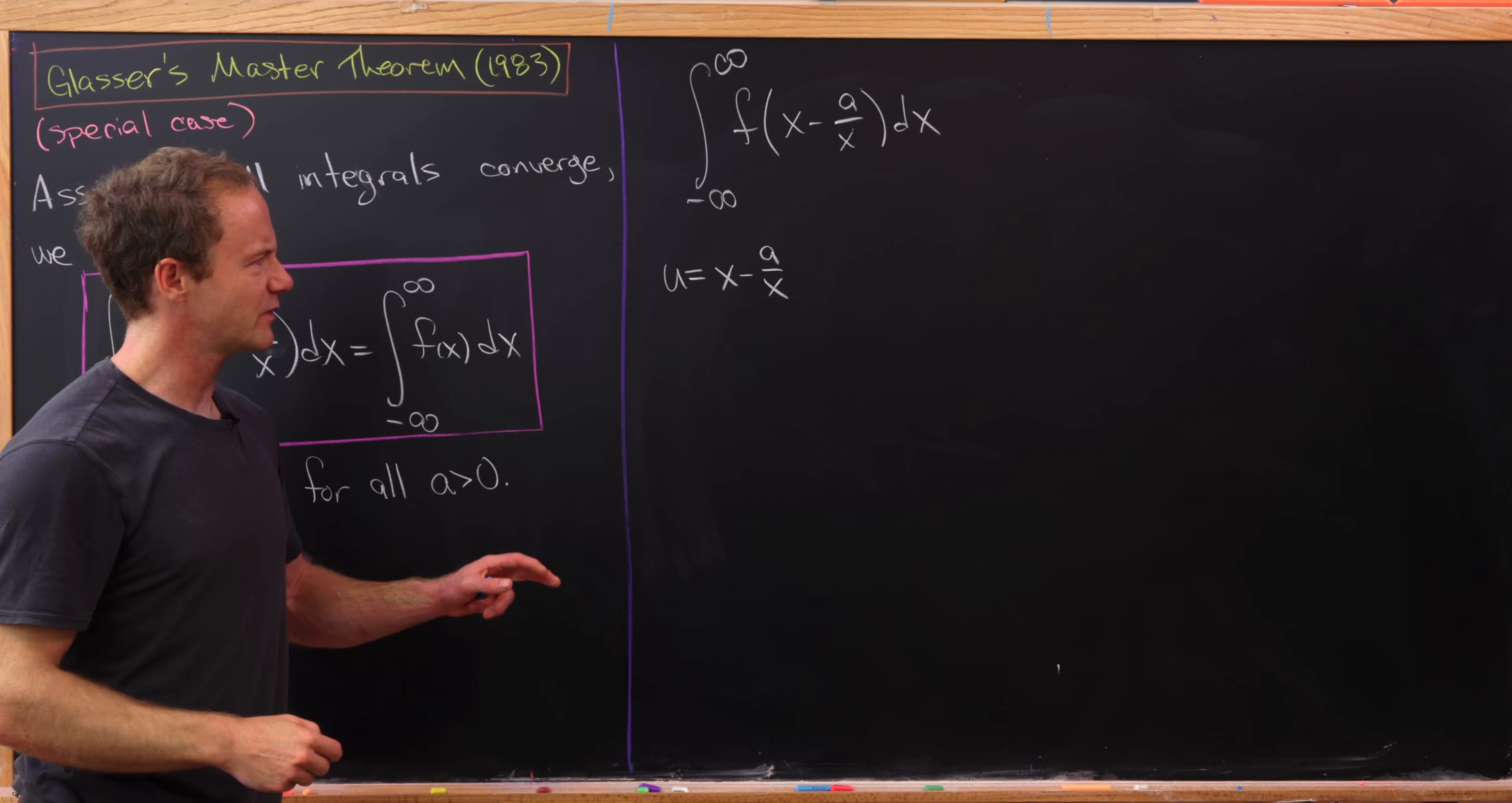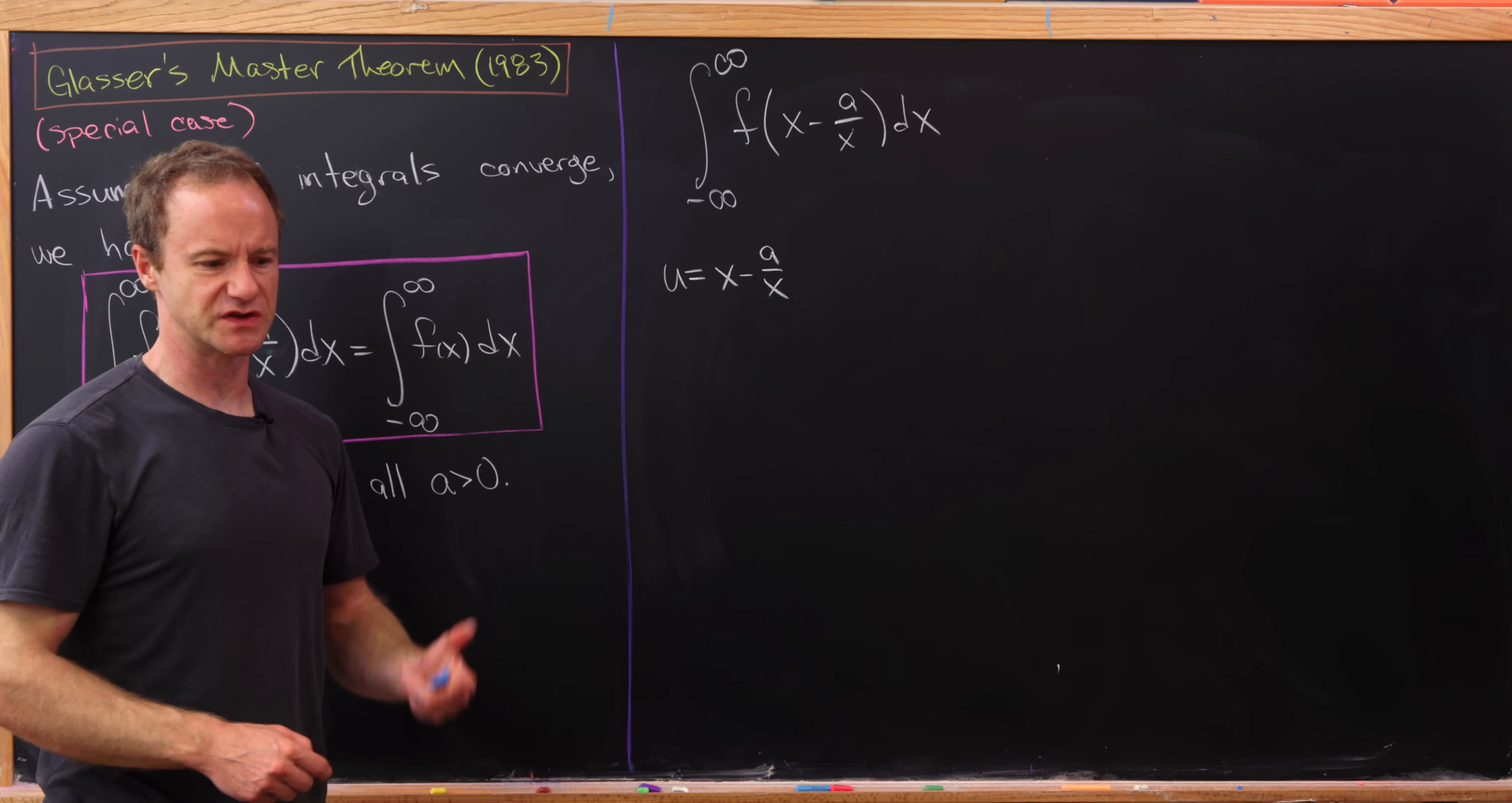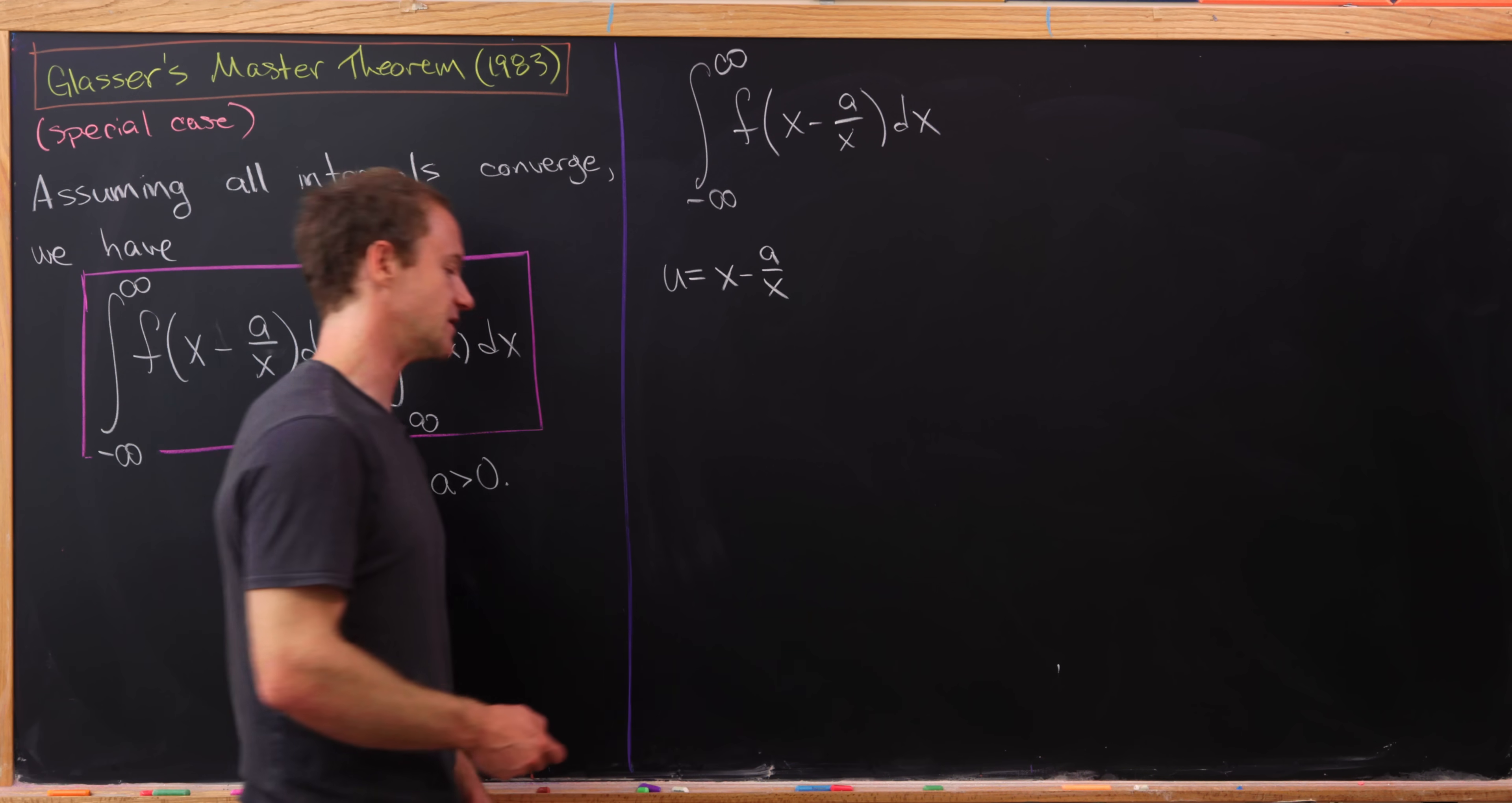We'd like to calculate du, but notice du is going to have a lot of dx's in there. But there's nothing outside the function. So what we'll do instead is so-called back substitution where we solve this for x and calculate dx in terms of du.